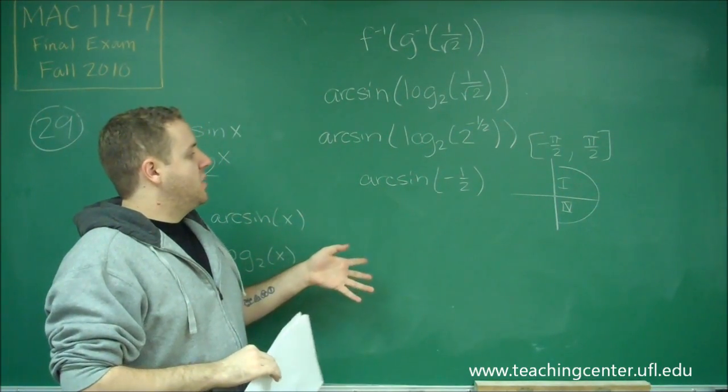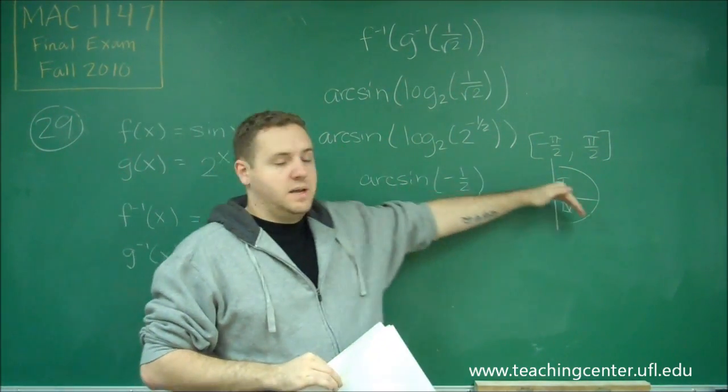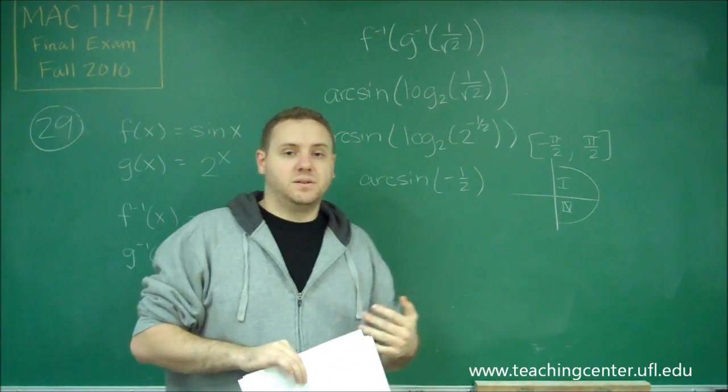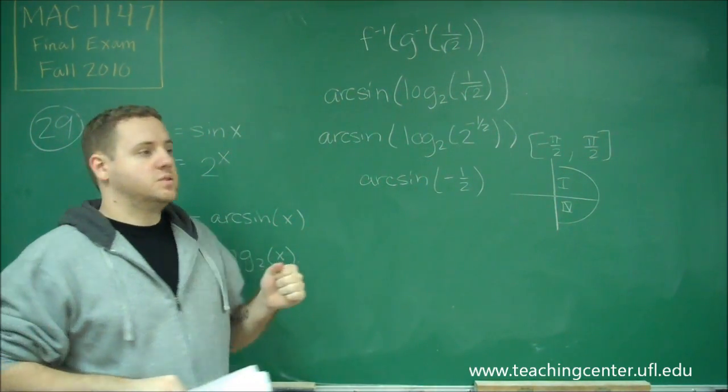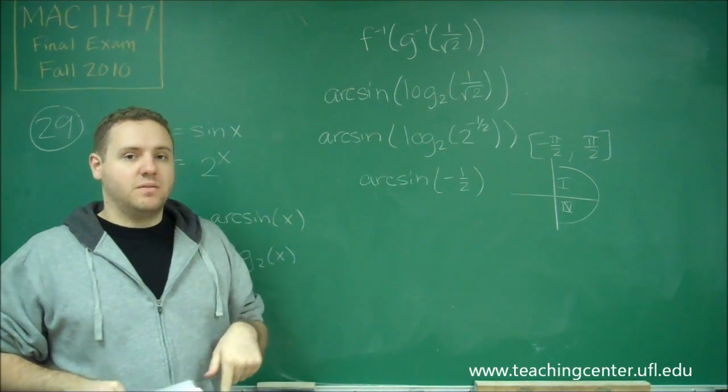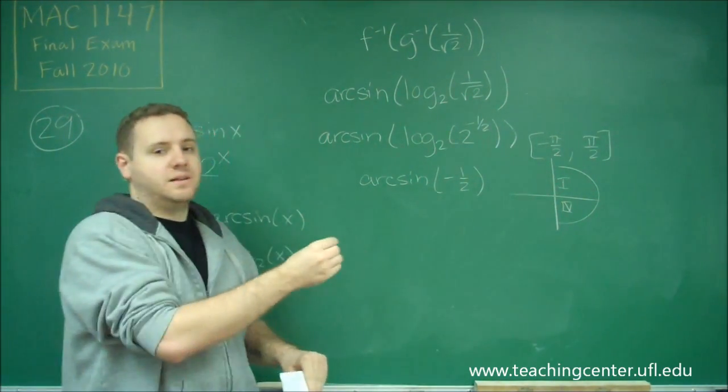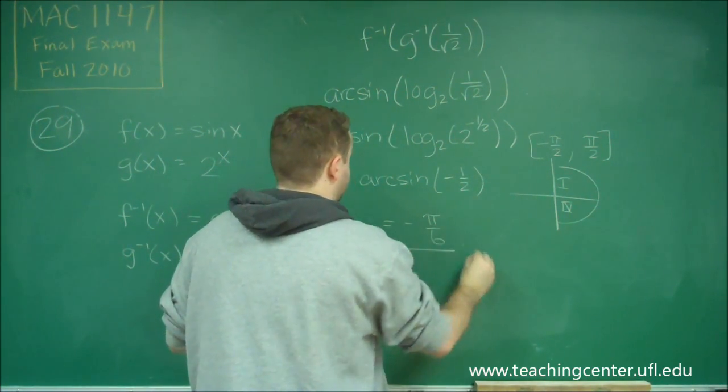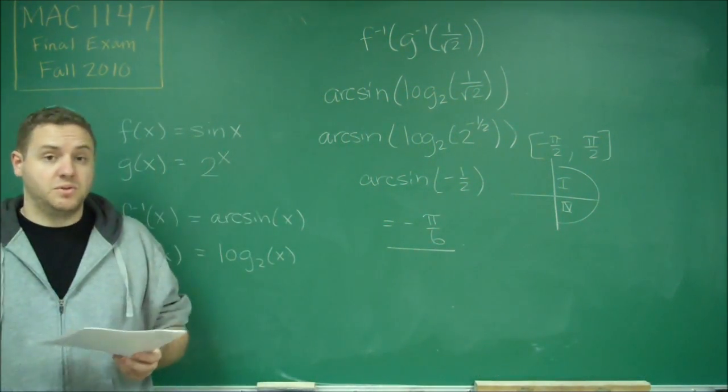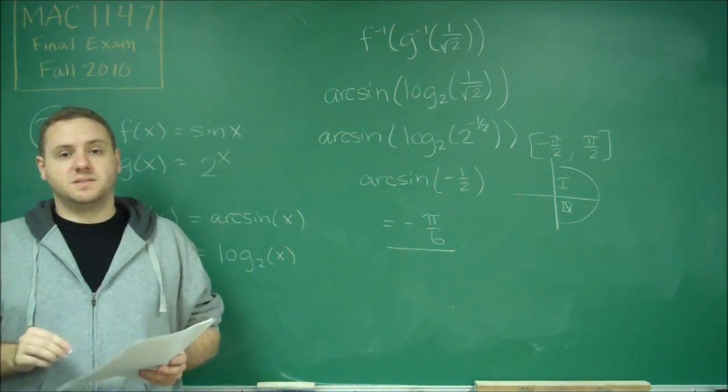So we want the angle that gives us 1 half, but in quadrant 4, written as a negative angle. So sine of pi over 6 is 1 half. So that would mean that sine of negative pi over 6 is negative 1 half. So arc sine of negative 1 half gives us negative pi over 6 by using our unit circle. So that gives us answer choice C.